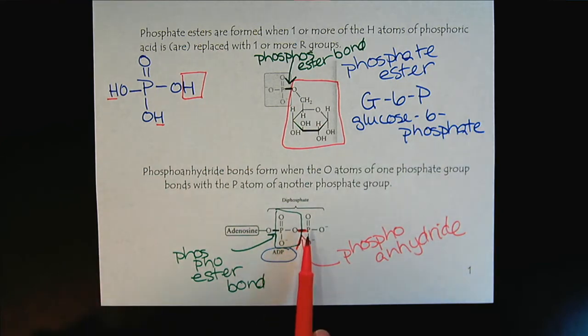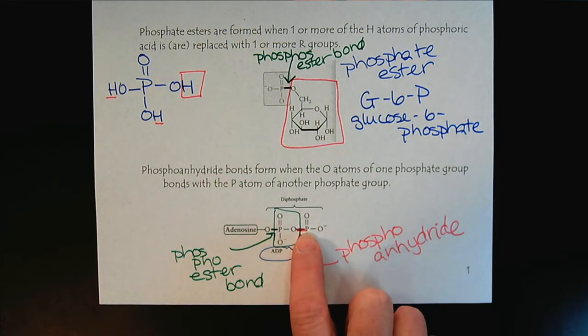Fortunately for us, these phosphoanhydride bonds are, we're able to make and reform, or break and reform these bonds. And we use that in energy production.